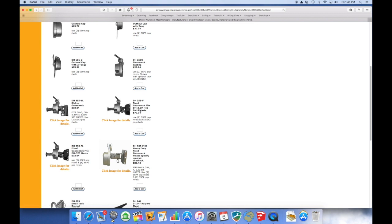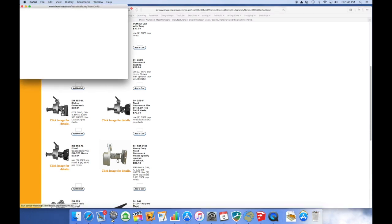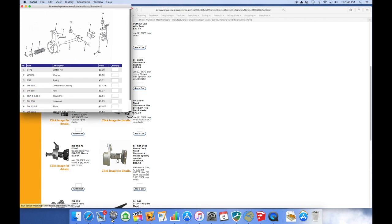Below that we have four goosenecks, and I found in investigating further that three of these—the 355-1L, 355-F, and 355-FL—are quite similar. They vary in how they attach to the mast and what mast they're supposed to go with. But as it says here, you can click on the images for further details.